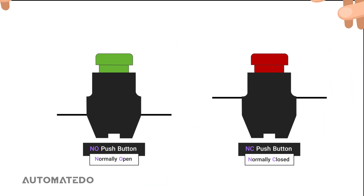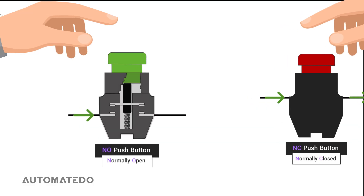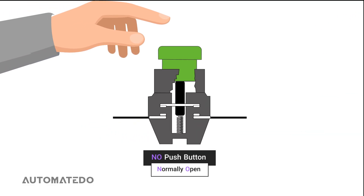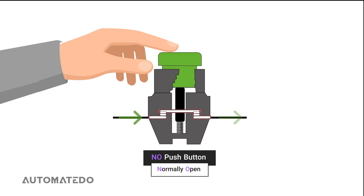Push buttons, available in either normally open or normally closed designs, are essential components for switching circuits. Each type can independently manage the flow of electricity in a circuit, depending on how they are wired and used. A normally open push button does not allow electrical flow when it is at rest because its internal contacts remain separated. Pressing the button causes those contacts to close, completing the circuit and allowing current to flow.